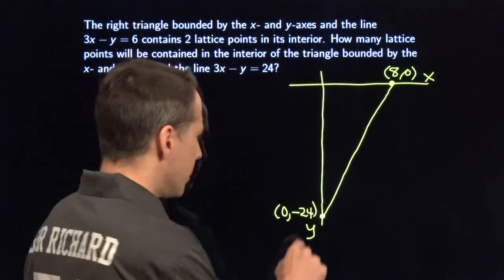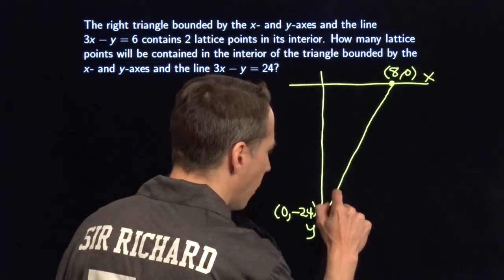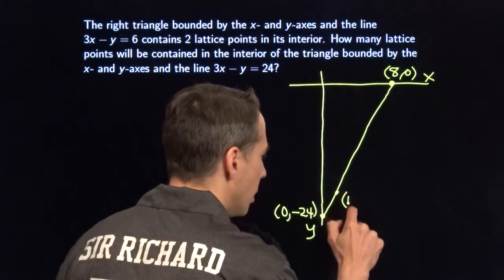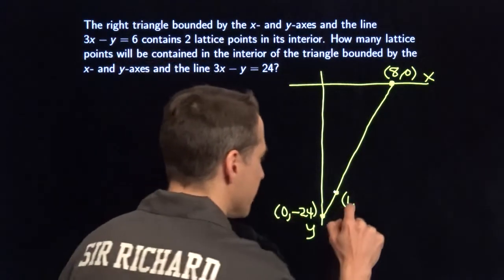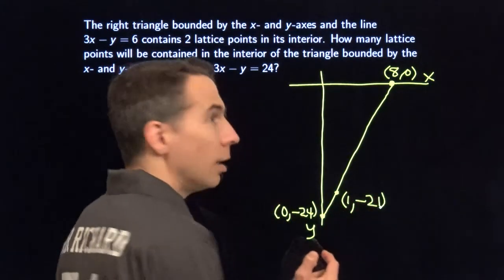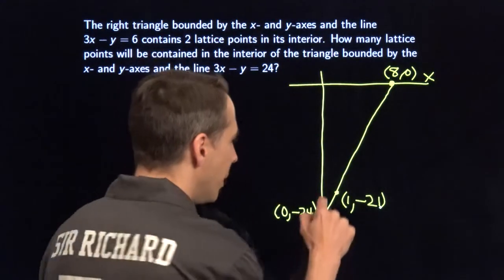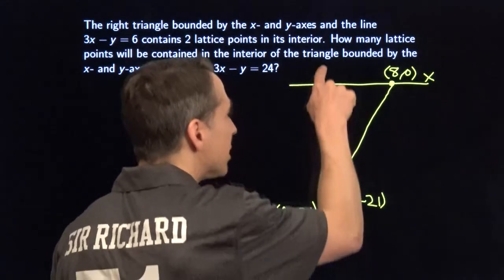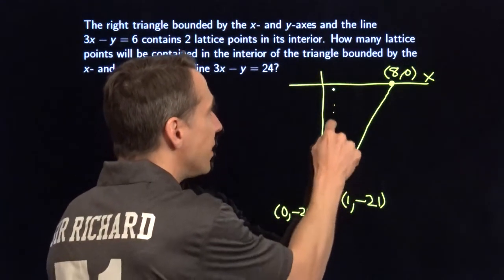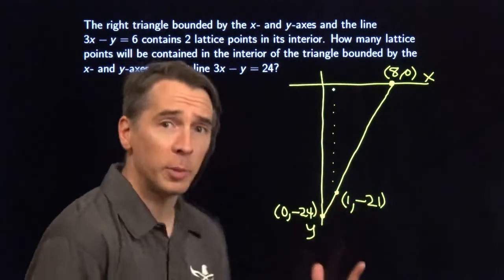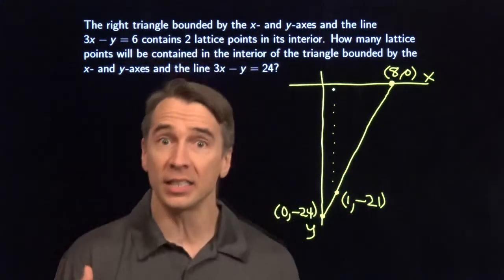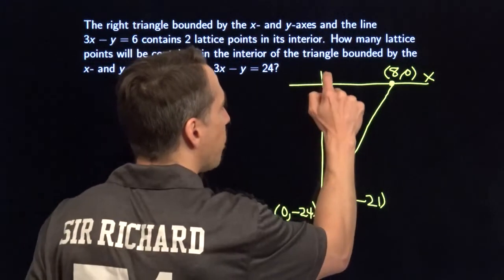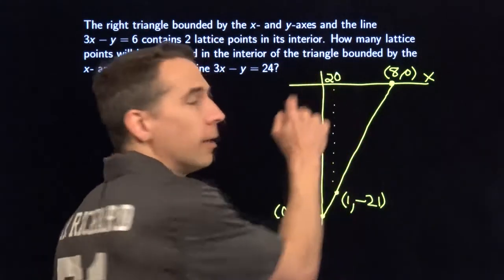So if we go over 1, we go up 3, we're back on the line. Over 1 gets x-coordinate 1, and up 3 will get us up to y is negative 21. Now I see what we're going to do — we go up from here. We can see that there are going to be 20 lattice points inside the triangle going up from here: going up from negative 21, negative 20, negative 19, negative 18, all the way up to negative 1, keeping x equal 1.